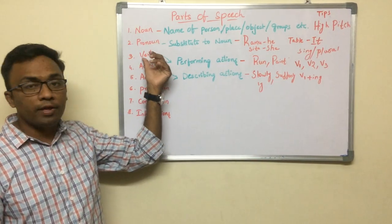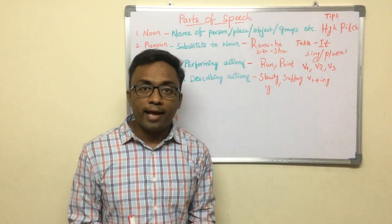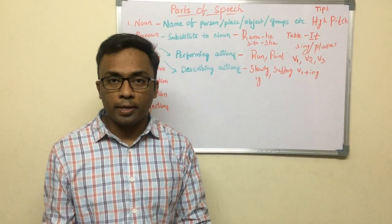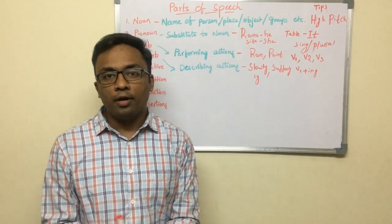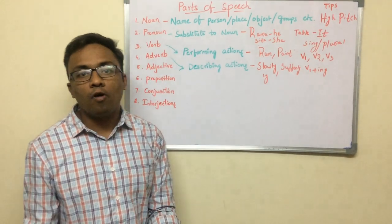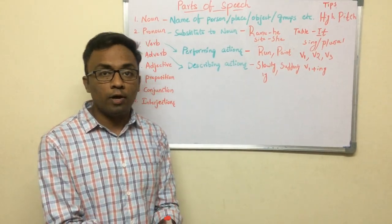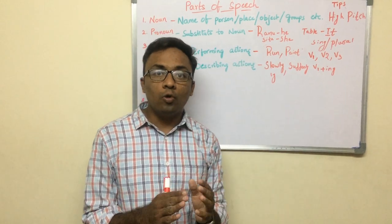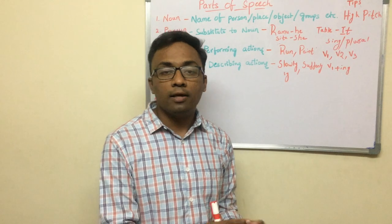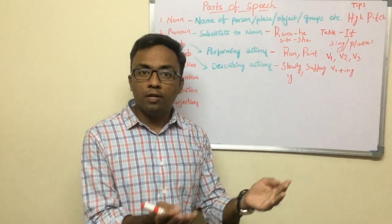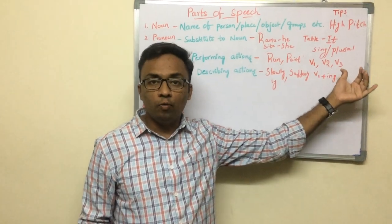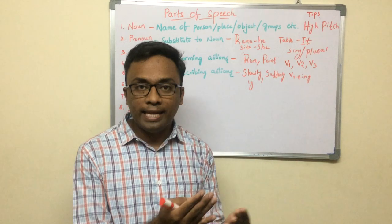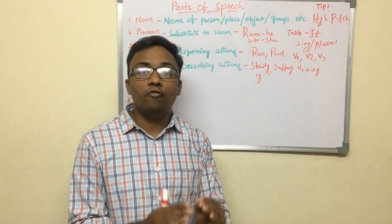Moving on to a very, very fundamentally important part: verb — an action word. We call it Kriya in Telugu. A word which describes the action being performed. We do many actions: eating, sleeping, drinking, thinking. Any action is described in the form of a verb. And why is it fundamentally very important? Verbs will have forms: V1, V2, V3, and V1 plus ING. Without knowing this, we can never speak or write proper English. In tenses, a future topic, we will clearly get to know about V1, V2, V3, and V1 plus ING. For general understanding, a common example: eat, ate, eaten, eating — V1, V2, V3, V1 plus ING. They are very, very important.